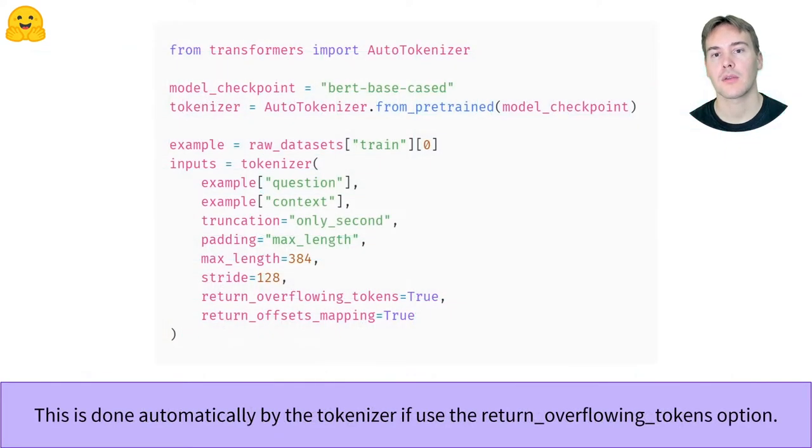This can be done by the tokenizer. We pass it the question, context, set the truncation for the context only, and the padding to the maximum length. The stride argument is where we set the number of overlapping tokens and the return overflowing tokens equal to true means we don't want to discard the truncated part.